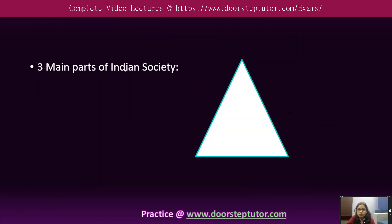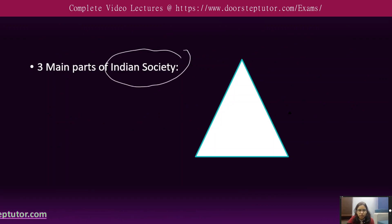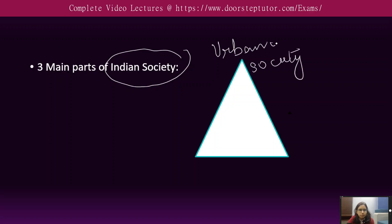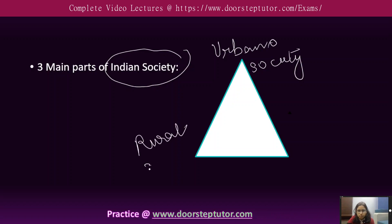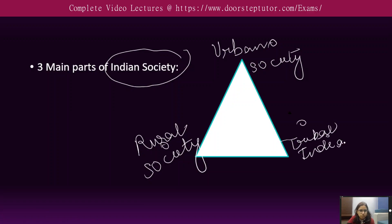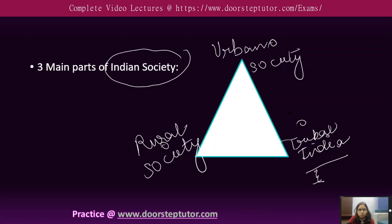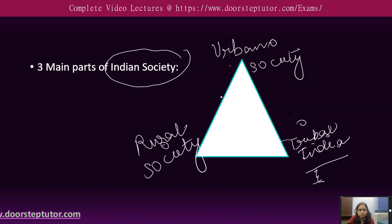Now we will see what is agrarian social structure. I want you to understand that Indian society is mainly divided into three parts — like a triangle. The first part is urban society or the urbanized parts of India. The second part is rural society. And the third part is tribal India or tribal society, which we also understood in the last lecture on caste and tribe settlements — tribes living in many places with different lifestyles, different cultures, and they are homogeneous groups. So we can categorize Indian society into three main parts: urban society, rural society, and tribal society.